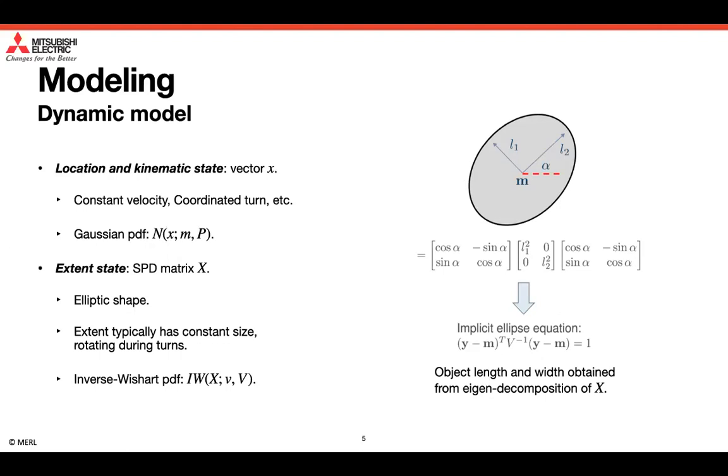When used to represent rectangular shape, the length and width of the object can be obtained from the eigen decomposition of the matrix as illustrated in the figure on the right. For rigid objects, the object extent has constant size and it rotates during turns. The extended state density is an inverse Wishart.